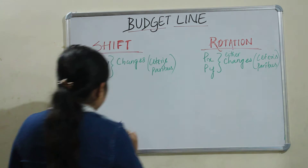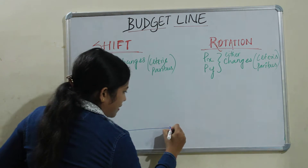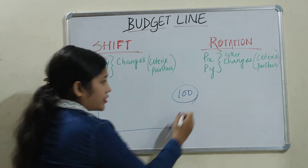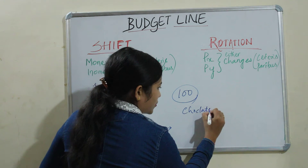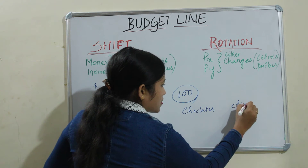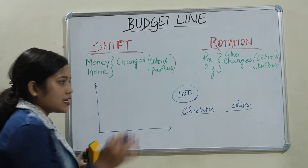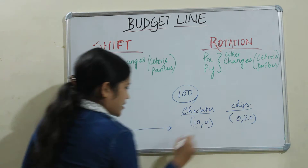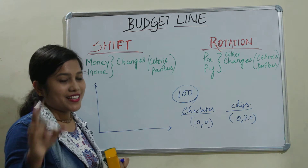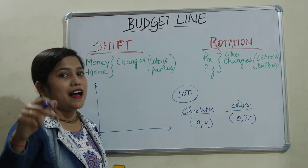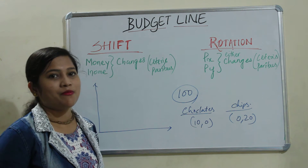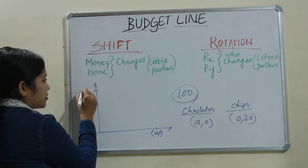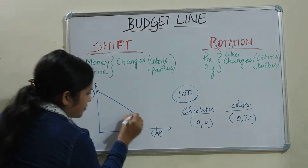In our previous video, our income was 100 rupees, and we allocated that 100 rupees to chocolates and chips. Our budget line points were: 10 chocolates and 0 chips, and 0 chocolates and 20 chips. That was our initial budget line.